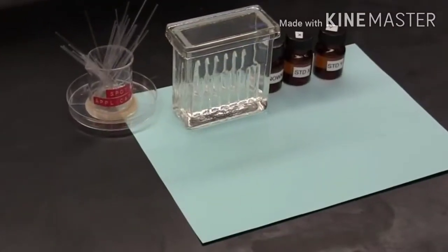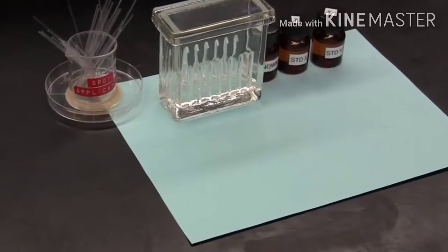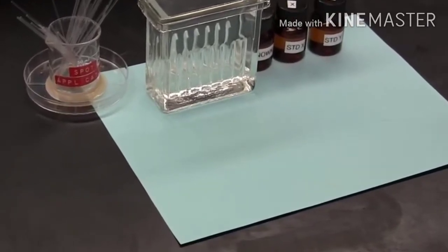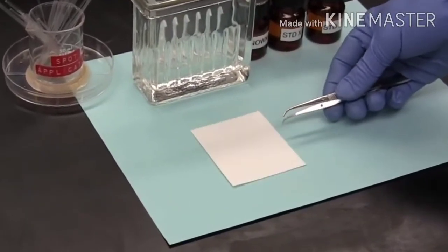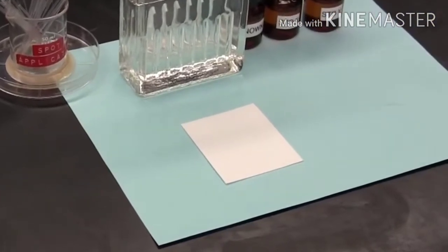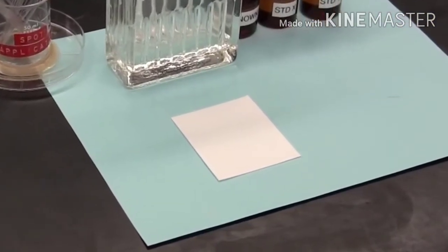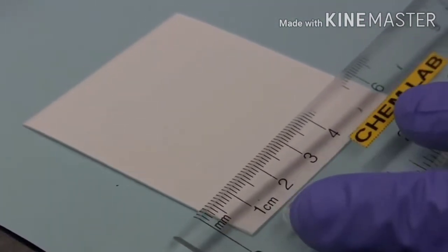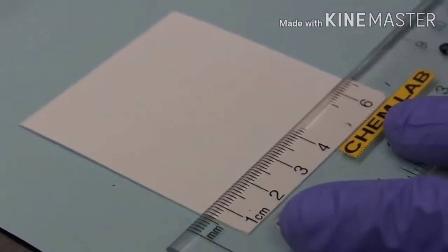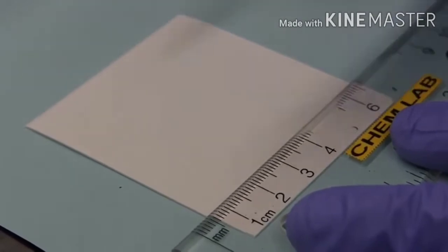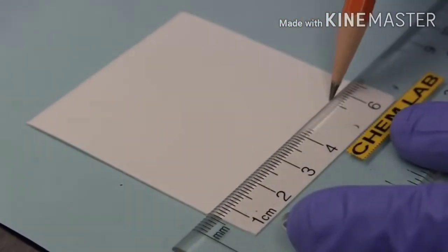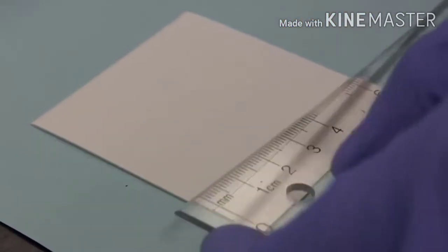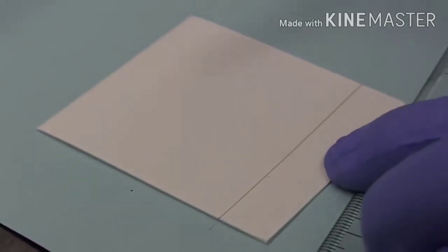Let's take a closer look. First of all, we need to prepare the TLC plate. Make sure that you handle it only by its edges or use tweezers since we don't want to contaminate the silica gel surface. A ruler is used to draw a line using a pencil about a centimeter from the bottom edge of the plate. Draw only a very light line and try not to score the surface of the silica. This line is called the origin.